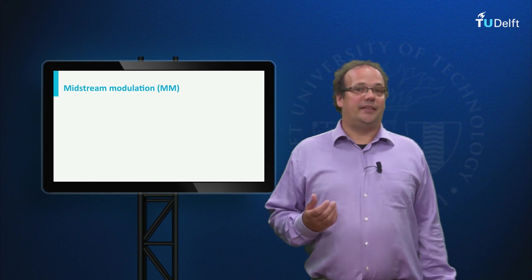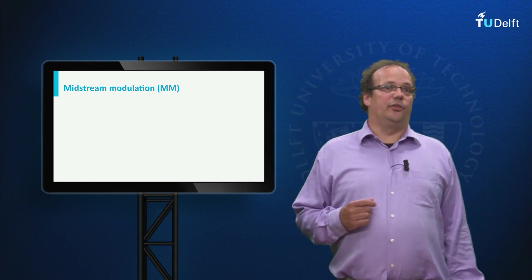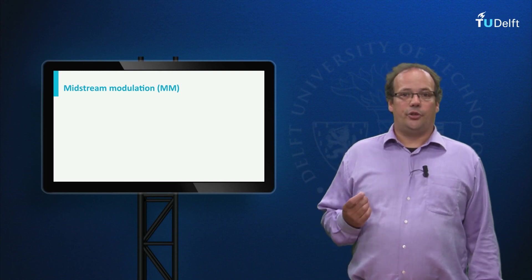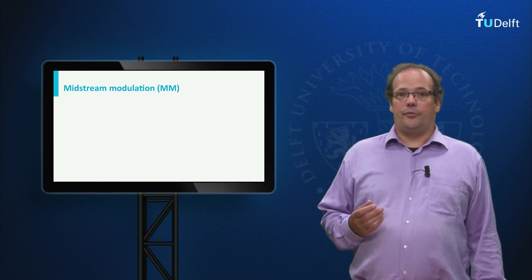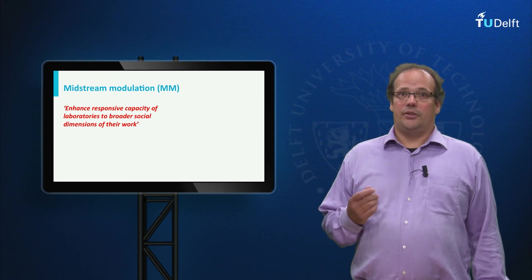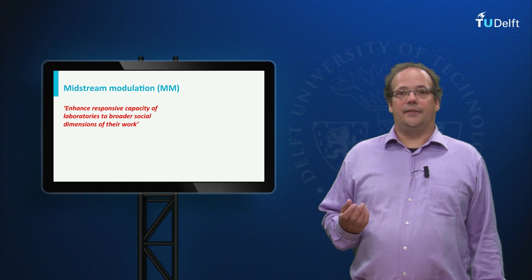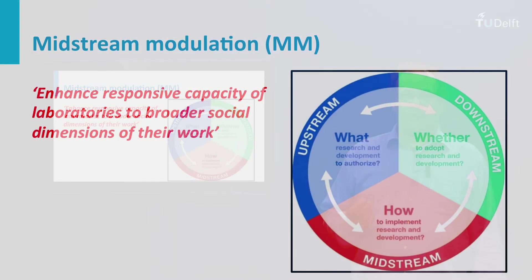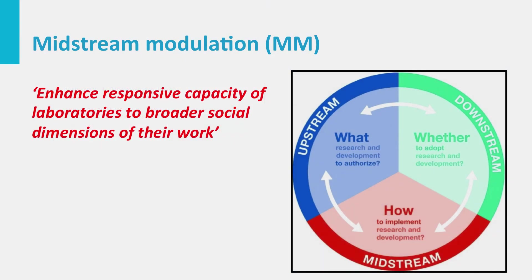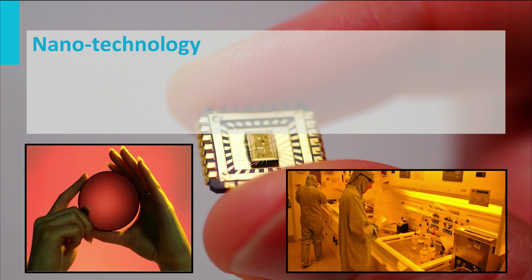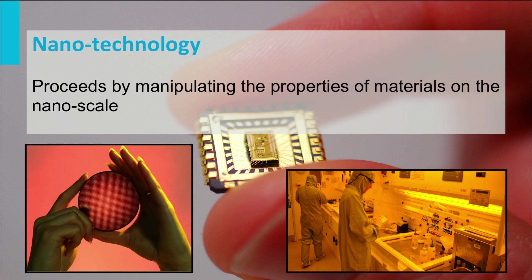The second current method is midstream modulation, mainly developed by Erik Fieser in the United States. The method is directed at research laboratories where new technologies are developed. The aim of midstream modulation is to enhance the responsive capacity of laboratories in order to broaden the social dimensions of the work. The term midstream stresses that the method focuses on modulating R&D practices, rather than upstream decisions on what research to fund or downstream decisions about how to use particular technologies. The method has mainly been applied to nanotechnology — an emerging technology that manipulates the properties of materials on the nanoscale, where a nanometer is 10 to the power of minus 9 meters.